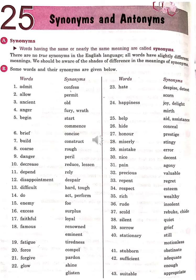Excess – Surplus. Disdain – Scorn (Nafrat). Happiness – Joy, Delight, Mirth (Khushi). Help – Aid, Assistance (Sahayata). Hide – Conceal.